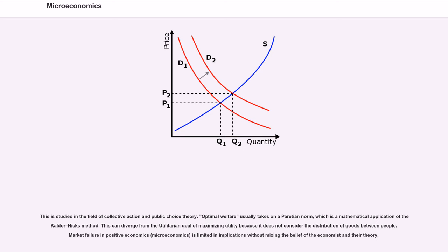This is studied in the field of collective action and public choice theory. Optimal welfare usually takes on a Paretian norm, which is a mathematical application of the Kaldor-Hicks method. This can diverge from the utilitarian goal of maximizing utility because it does not consider the distribution of goods between people.